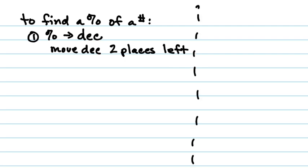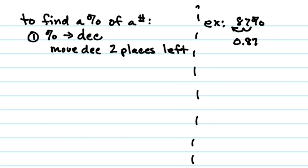Let's quickly look at an example. Say you have 87% and we want to change that to a decimal. Where's the decimal in 87 right now? At the end of the 7. And it's going to move two places to the left, so that's going to be 0.87. If you use your calculator, you can just multiply with the percent — it makes no difference. Also, if it's 101%, it would just be 1.01. So if you have 107%, it's just going to move those two places, so you'll have more than one.